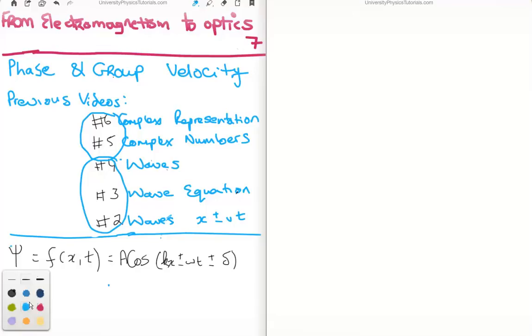Just a small bit of a recap: we know that we can write a harmonic wave function as a function in one dimension of x and t. And we can write that as A times the cosine of kx minus omega t plus delta.